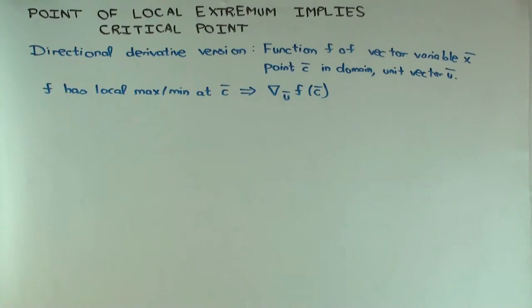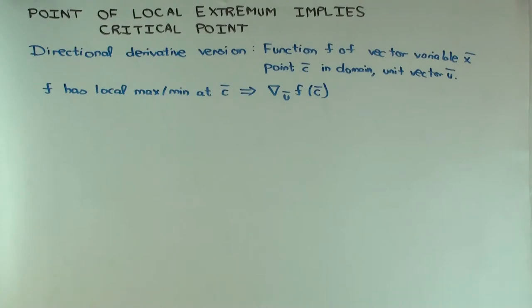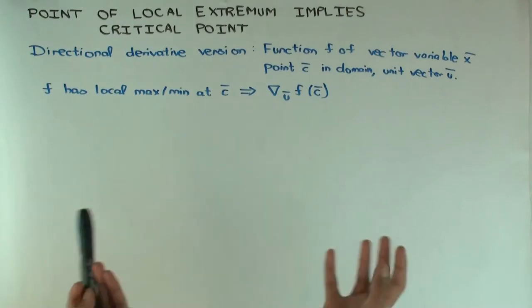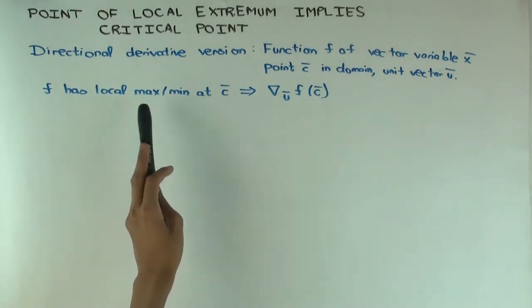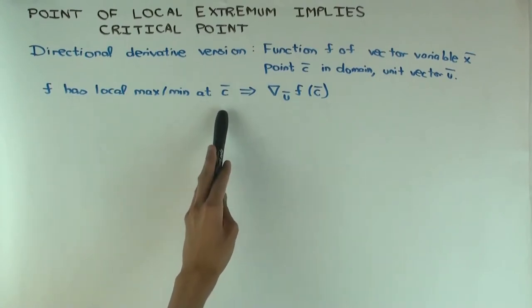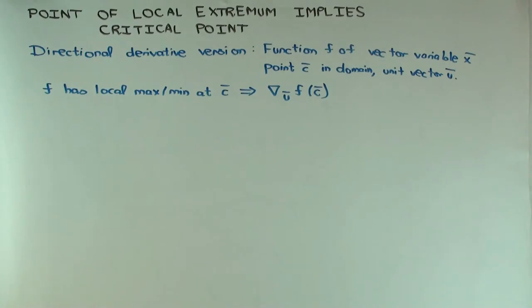Now suppose f has a local max or min at C. Local max at C means f(C) is greater than or equal to f(x) for x within a neighborhood of C. Since we have many directions — not just left and right — local max means local max in all directions. Local max means f(C) is greater than or equal to values in some open ball containing the point; local min means less than or equal.